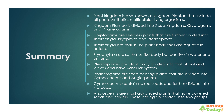Plant kingdom is also known as kingdom plantae, which includes all photosynthetic, multicellular living organisms. Kingdom plantae is divided into two sub-kingdoms: cryptogames and phanerogames. Cryptogames are seedless plants further divided into thallophyta, bryophyta, and pteridophyta. Thallophyta have a thallus-like plant body and are aquatic in nature. Bryophyta are also thallus-like in body but can live in water and on land. Pteridophytes have plant body divided into root, shoot, and leaves, and have a vascular system. Phanerogames are seed-bearing plants divided into gymnosperms and angiosperms. Gymnosperms contain naked seeds and are further divided into four groups. Angiosperms are the most advanced plants that have covered seeds and flowers, and are again divided into two groups.